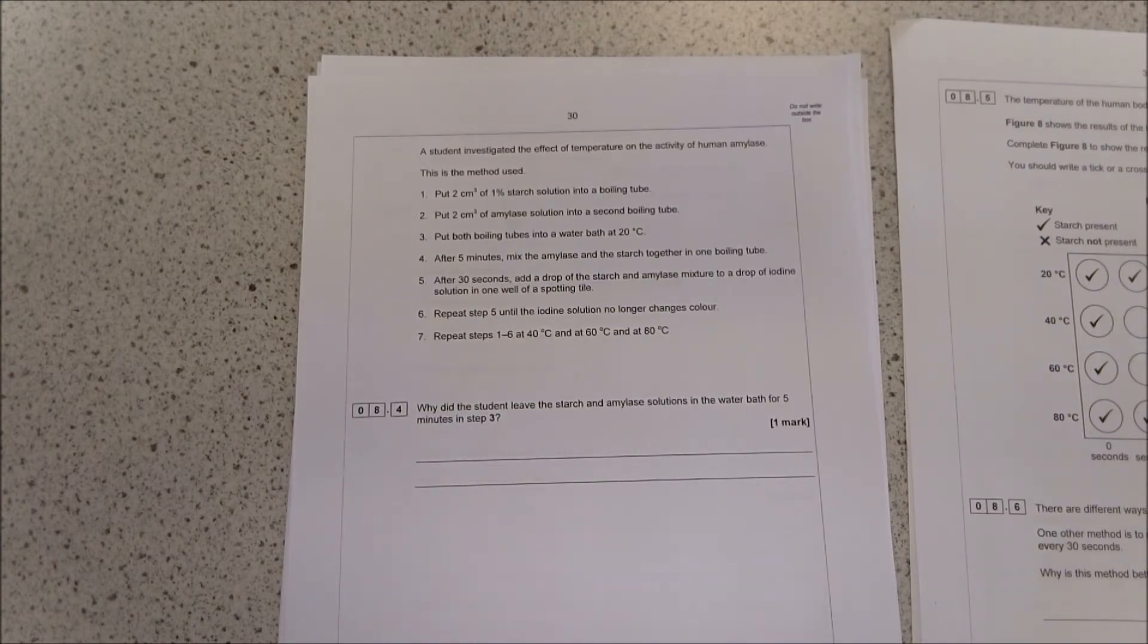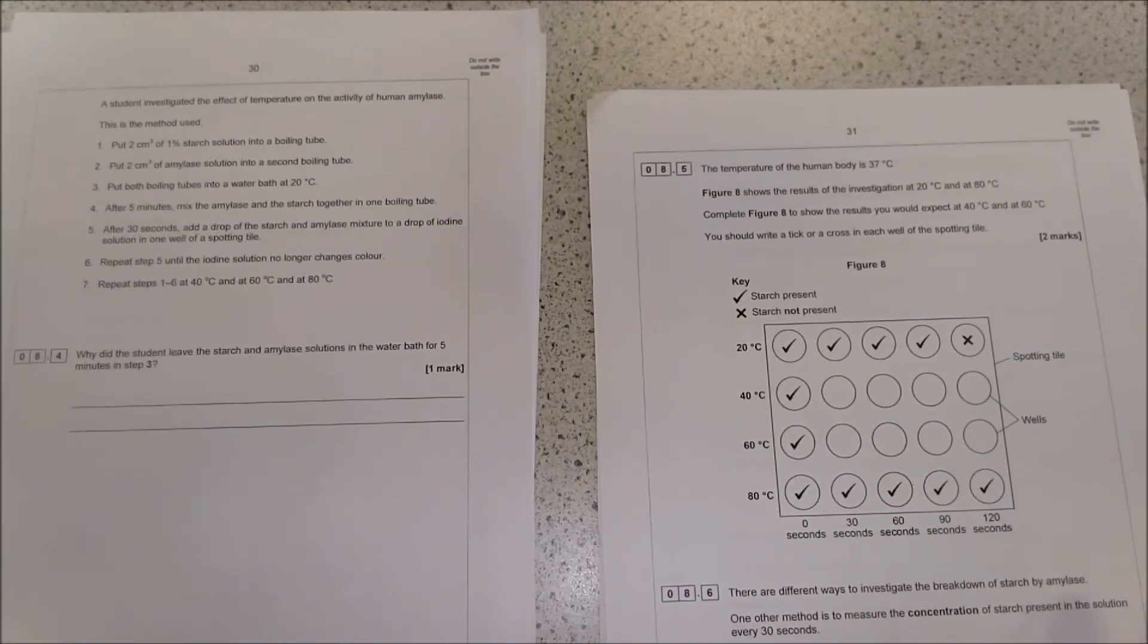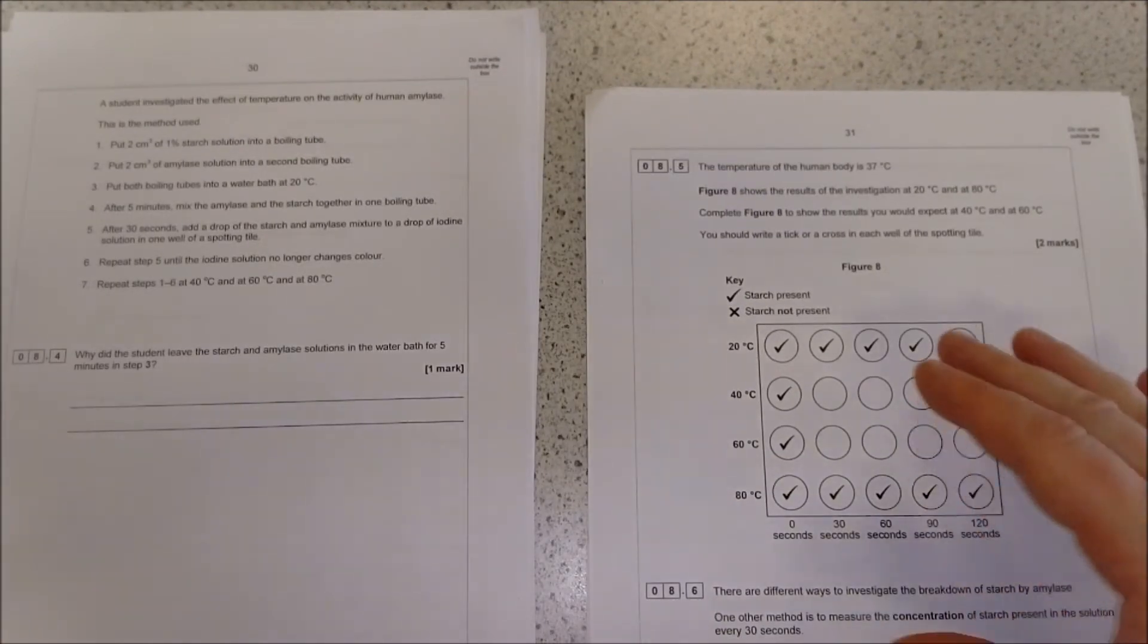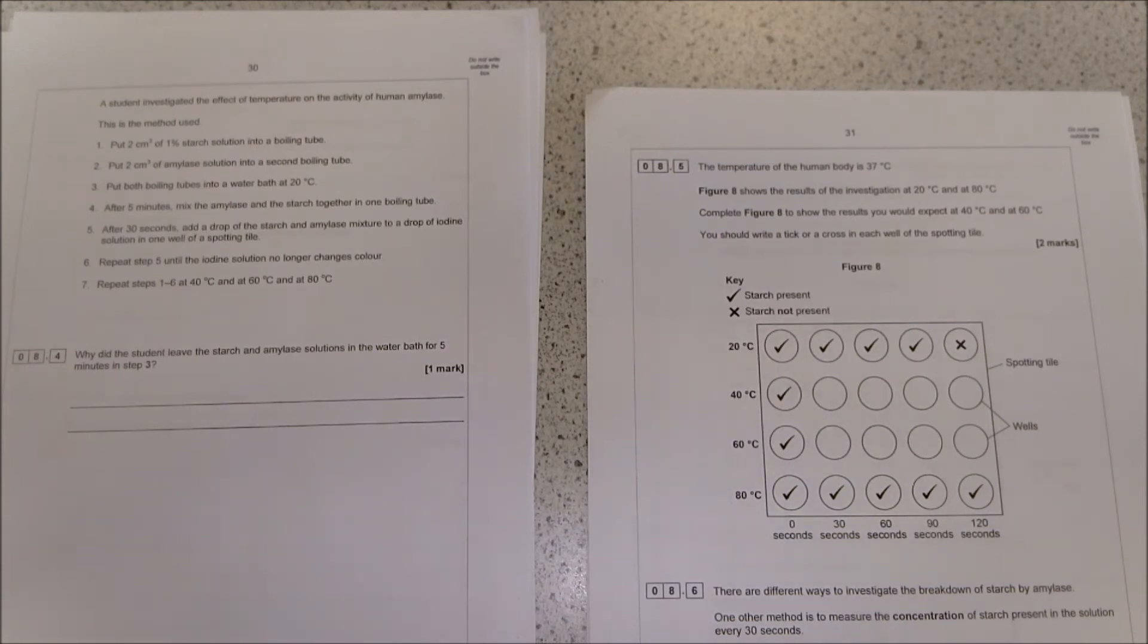It moves on to talking about the results. The temperature of body temperature is 37.5 degrees. Figure 8 shows the results of the investigation at 20 degrees and 80 degrees. Complete Figure 8 to show the results you would expect from 40 degrees and 60 degrees. Remember, at 40 degrees it's going to happen quicker than at 20 degrees. However, enzymes become denatured after about 41 degrees.